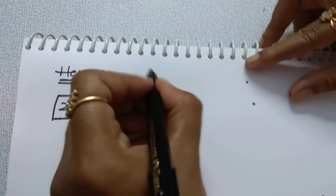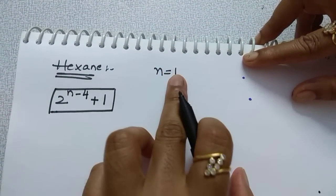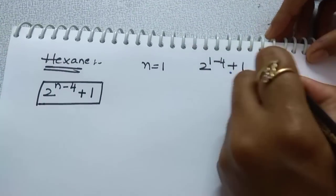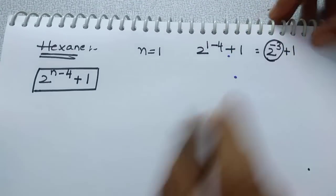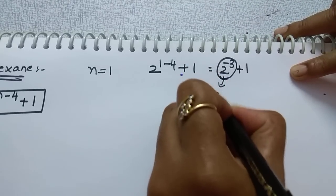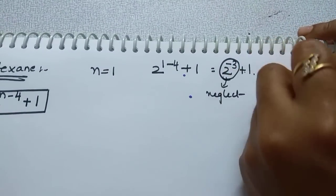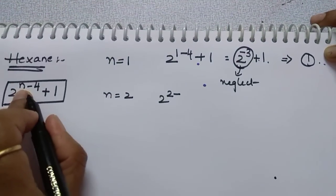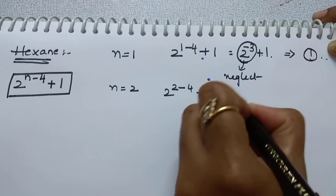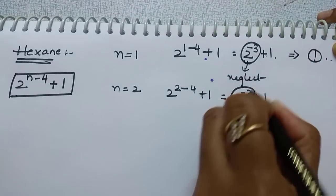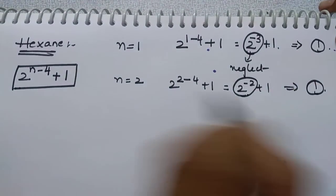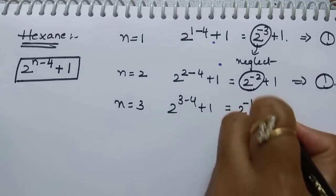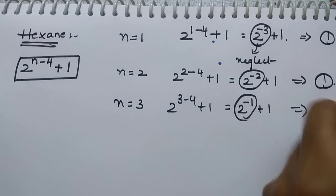Let us find isomers for n=1: 2^(1−4)+1 = 2^(−3)+1. This is a negative exponent, so neglect that term — only 1 isomer is possible. For n=2: 2^(2−4)+1 = 2^(−2)+1 — again negative, neglect it, so 1 isomer. For n=3: 2^(3−4)+1 = 2^(−1)+1 — negative again, so 1 isomer. The formula correctly shows that methane, ethane, and propane each have only 1 isomer.